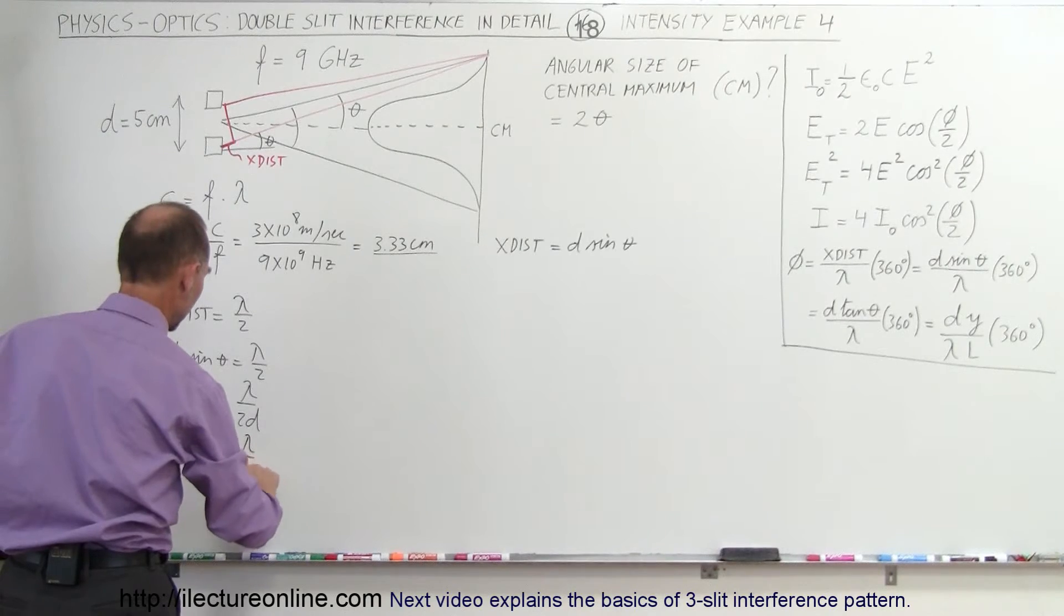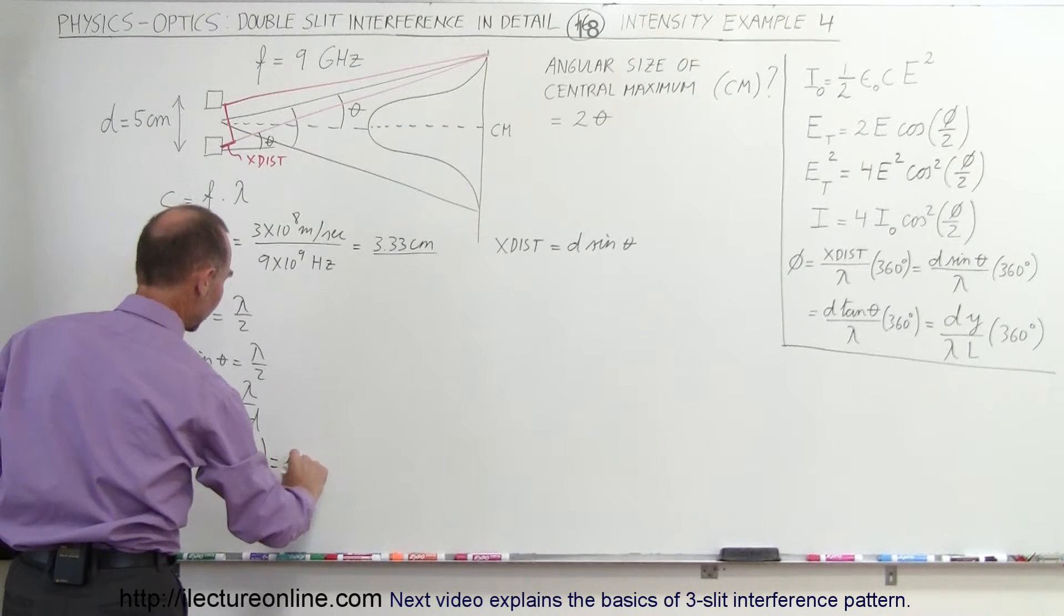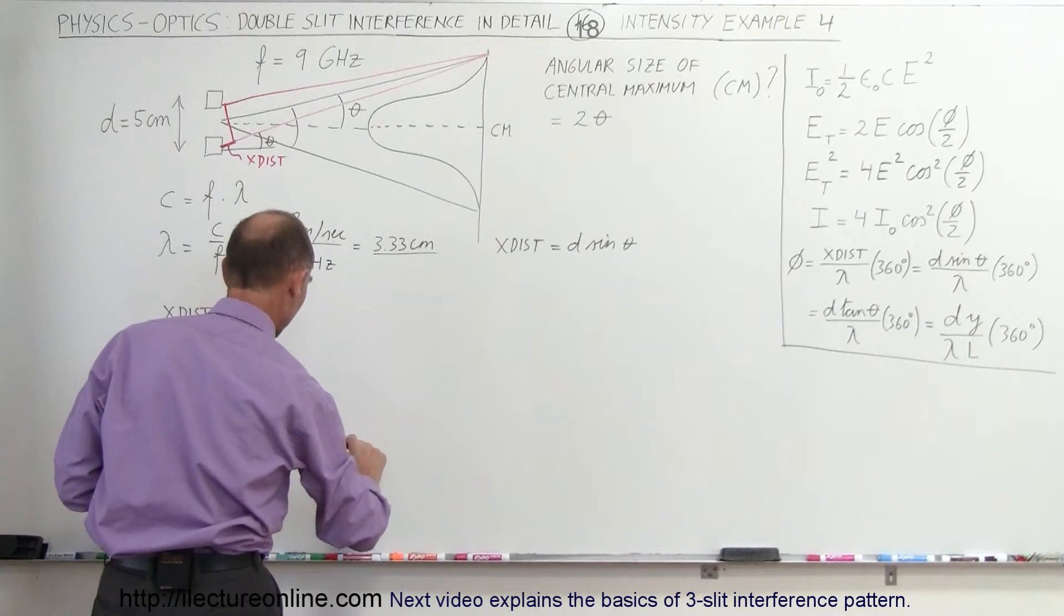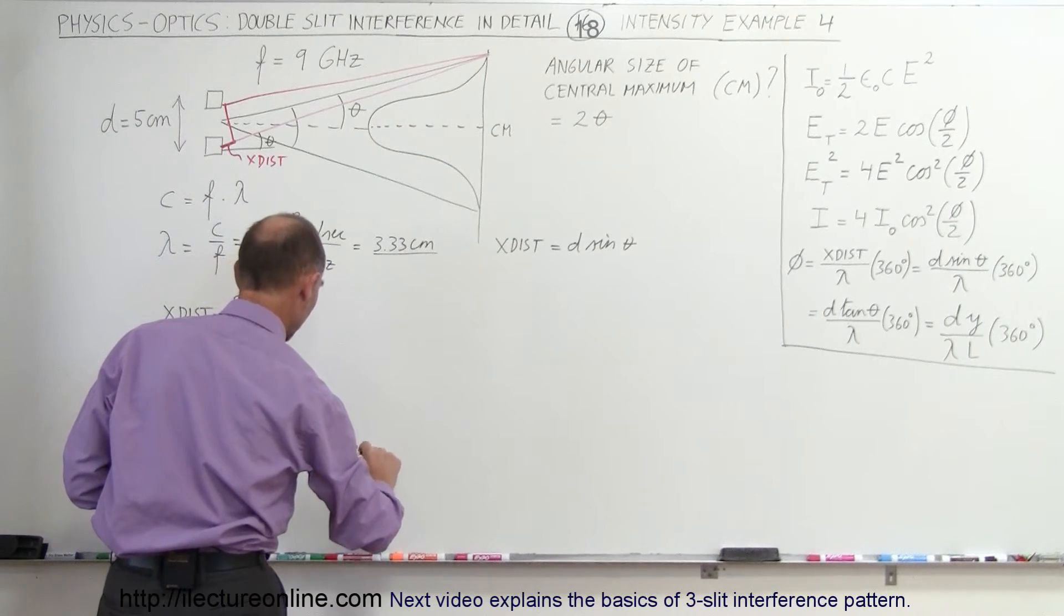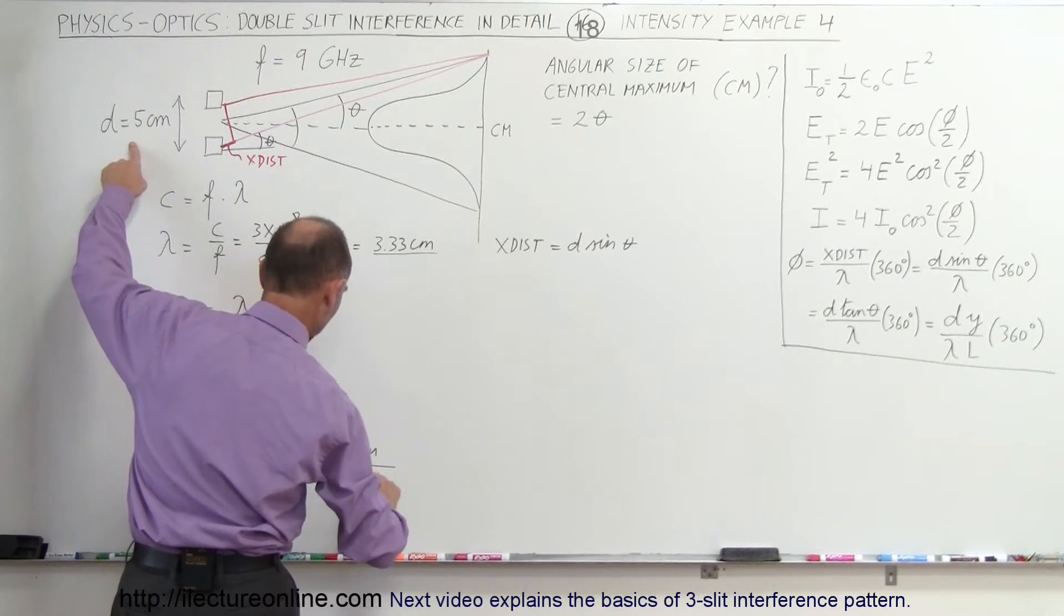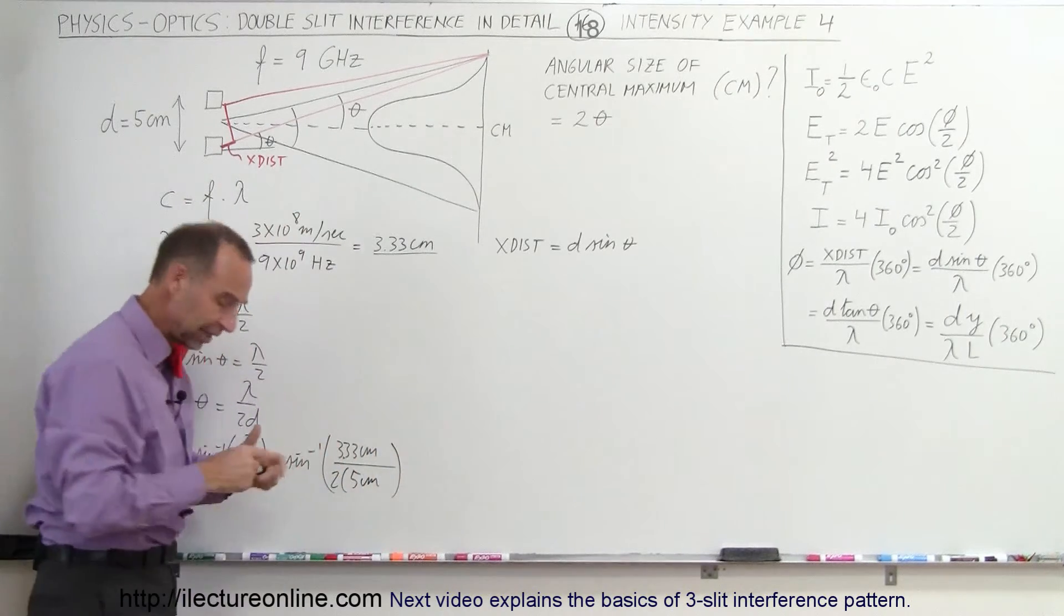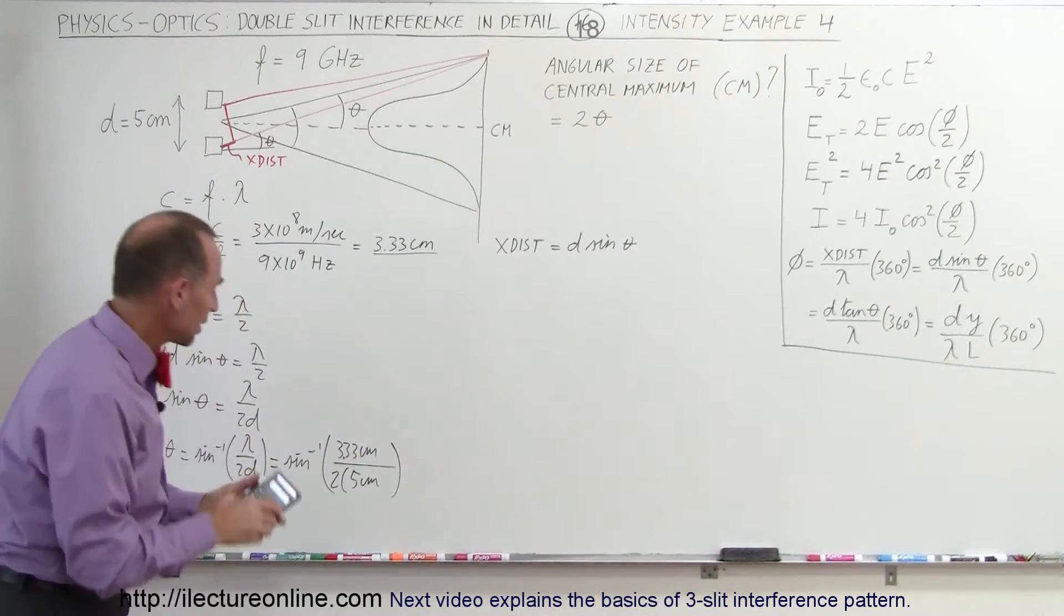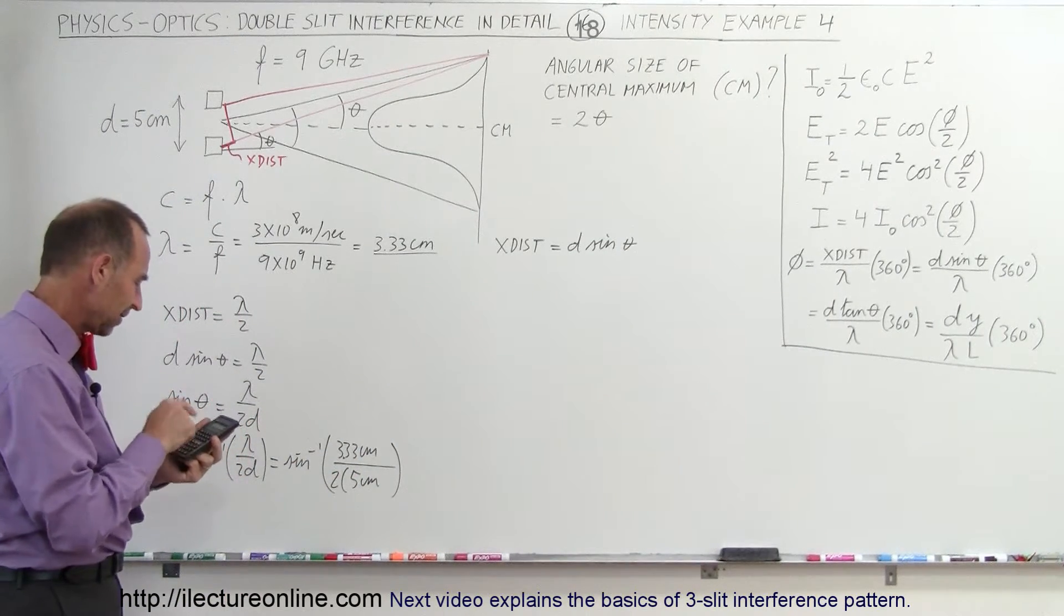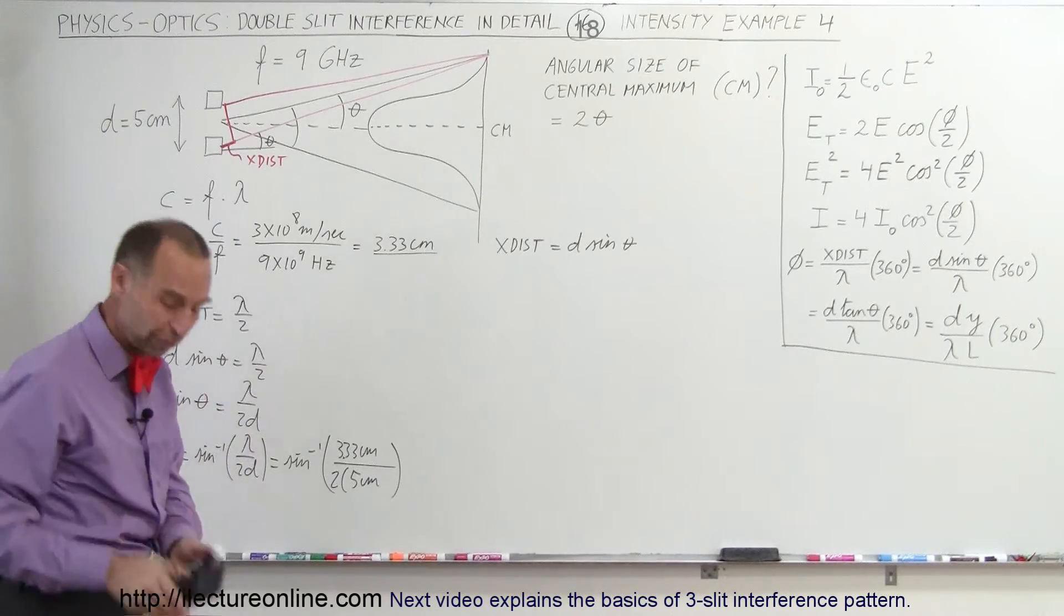Therefore sine theta equals lambda divided by 2D, or theta equals the arc sine of lambda divided by 2D, which equals the arc sine of 3.33 centimeters divided by 2 times 5 centimeters. That's 0.333, and taking the arc sine gives us 19.45 degrees.